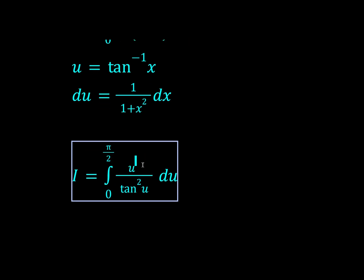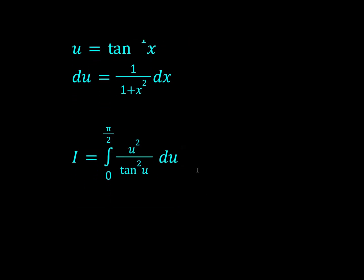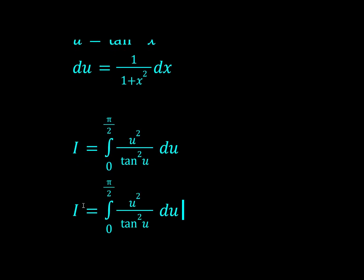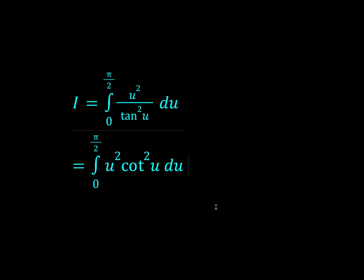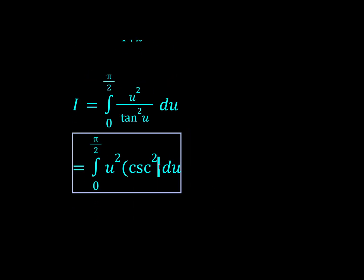Okay, so now we could write this as u squared times cot squared, probably. Yeah, let's do that. And then cot squared is just csc squared minus 1.